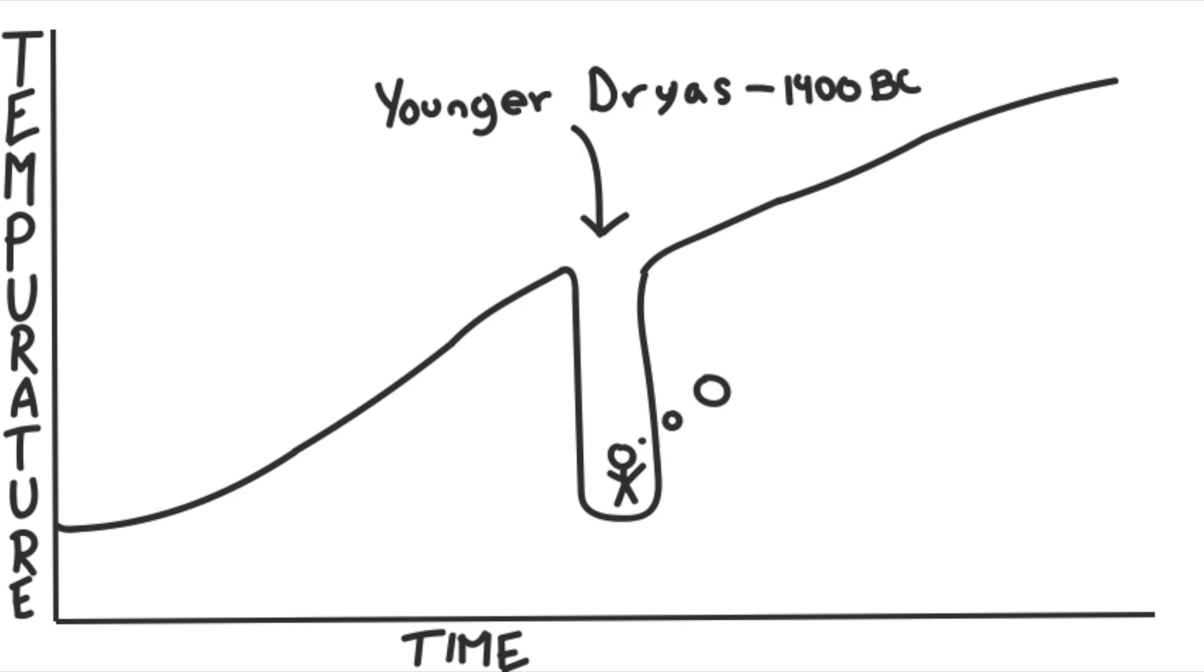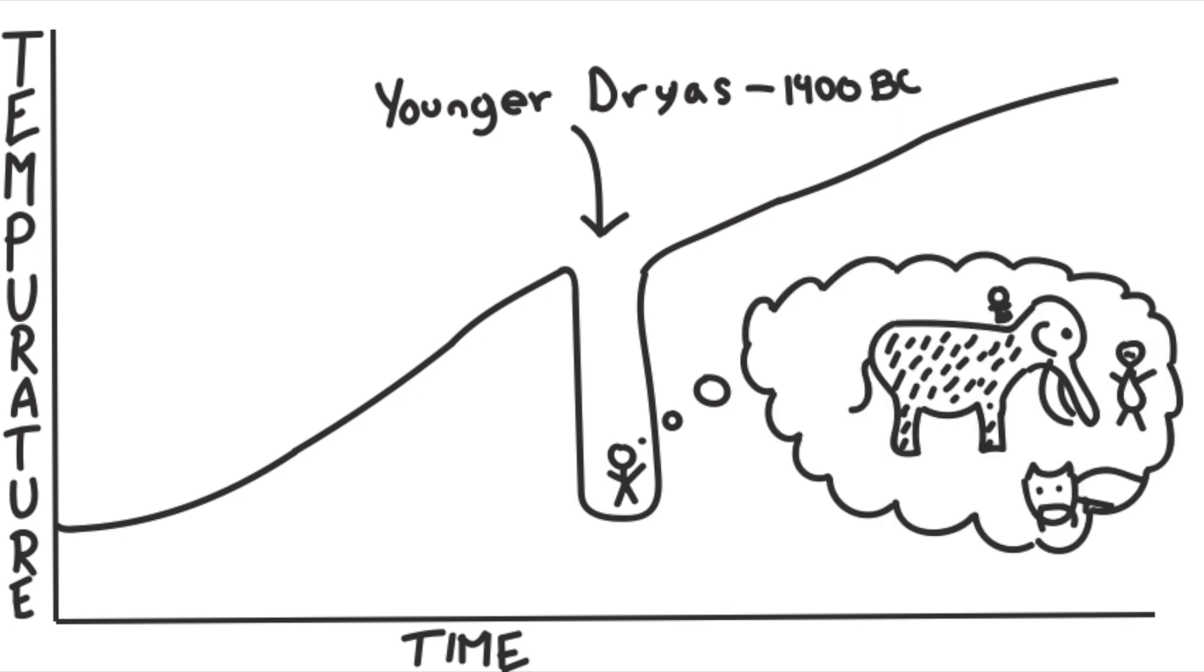This was a climate change that decreased the global temperature so drastically that it created another ice age. As far as ice ages go, it was a rather short one and only lasted about 1,300 years.